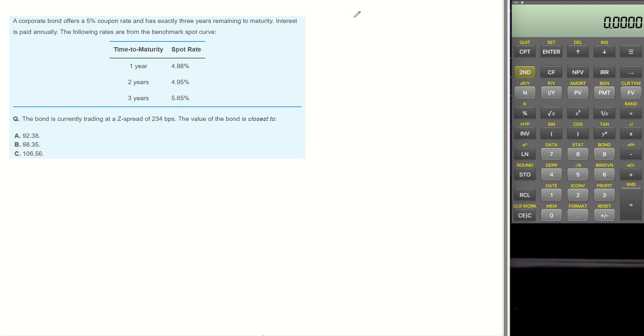The question is, what is the value of the bond? G-spread is a constant spread above the spot curve, and bond price can be calculated based on G-spread and spot rate.